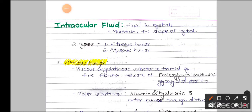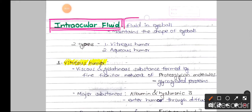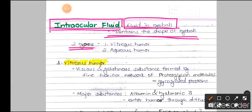Welcome to MBBS Buddy. In this video we are going to learn about the intraocular fluid — the fluid present inside our eyeball. It maintains the shape of the eyeball and is of two types: the vitreous humor and the aqueous humor. The chamber in which it is present determines which humor it is. Humor means body fluid.